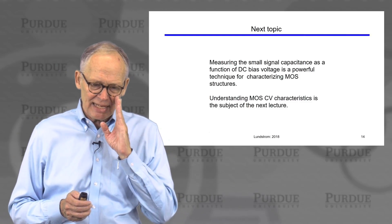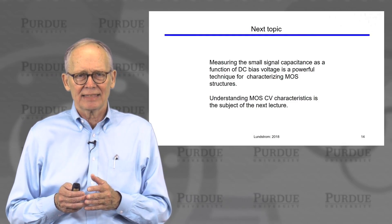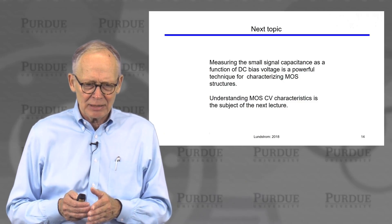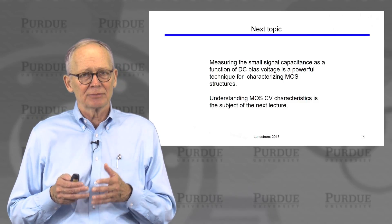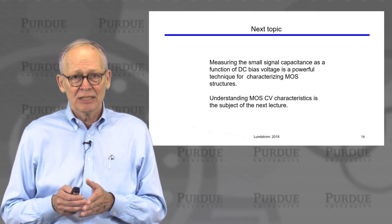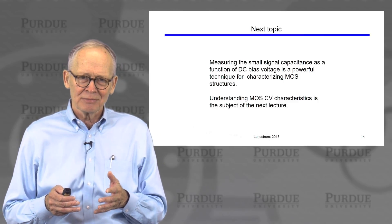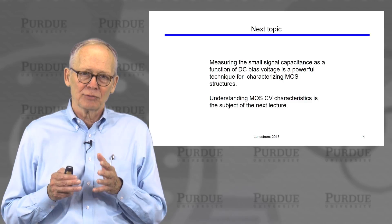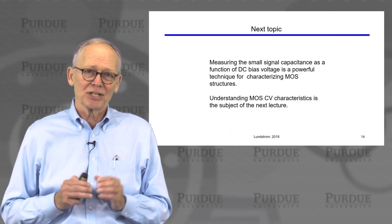We're ready to move on to the next topic. I want to talk about a technique that is widely used to characterize MOS structures. We're not getting to transistors yet, but people will frequently build MOS capacitors and analyze their characteristics by measuring their capacitance versus DC bias on the capacitor. One can extract a lot of information about the MOS system from those measurements. So we'll get acquainted with the capacitance versus voltage characteristics of these MOS capacitors — that's our topic for the next lecture.